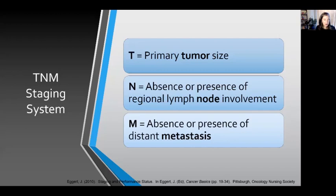Another way to stage cancer is the TNM staging system. T stands for the primary tumor size, N stands for the absence or presence of regional lymph node involvement, and M stands for the absence or presence of distant metastasis. This looks at very similar things as the stage one through four staging system, and preference between them may vary by oncologist and diagnosis type.